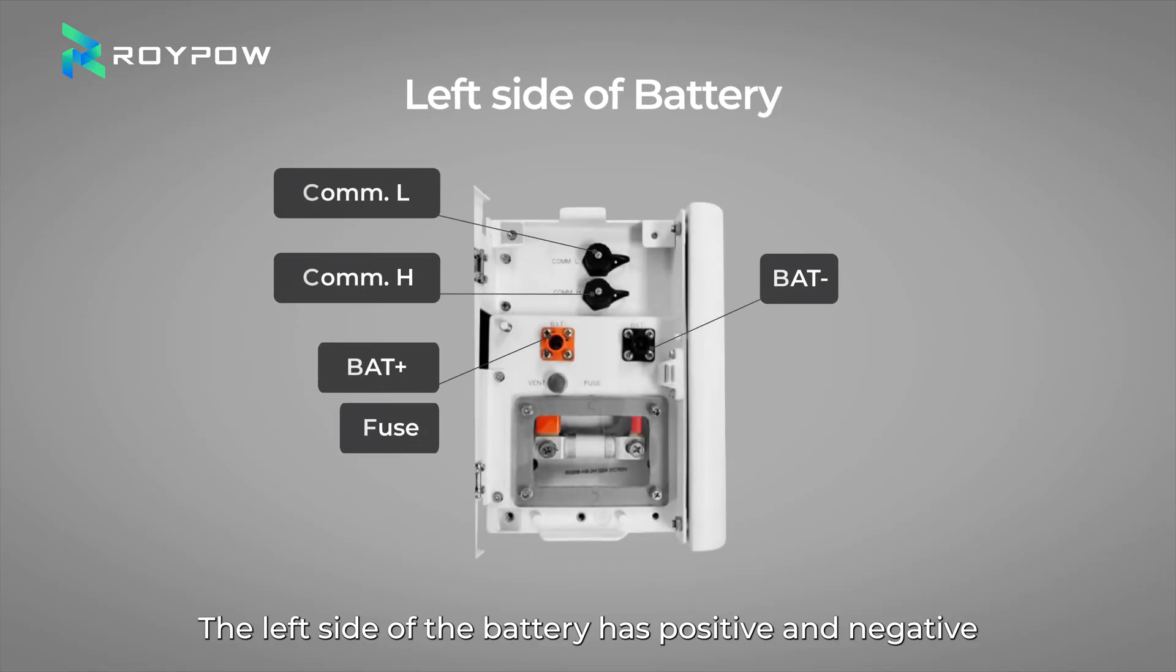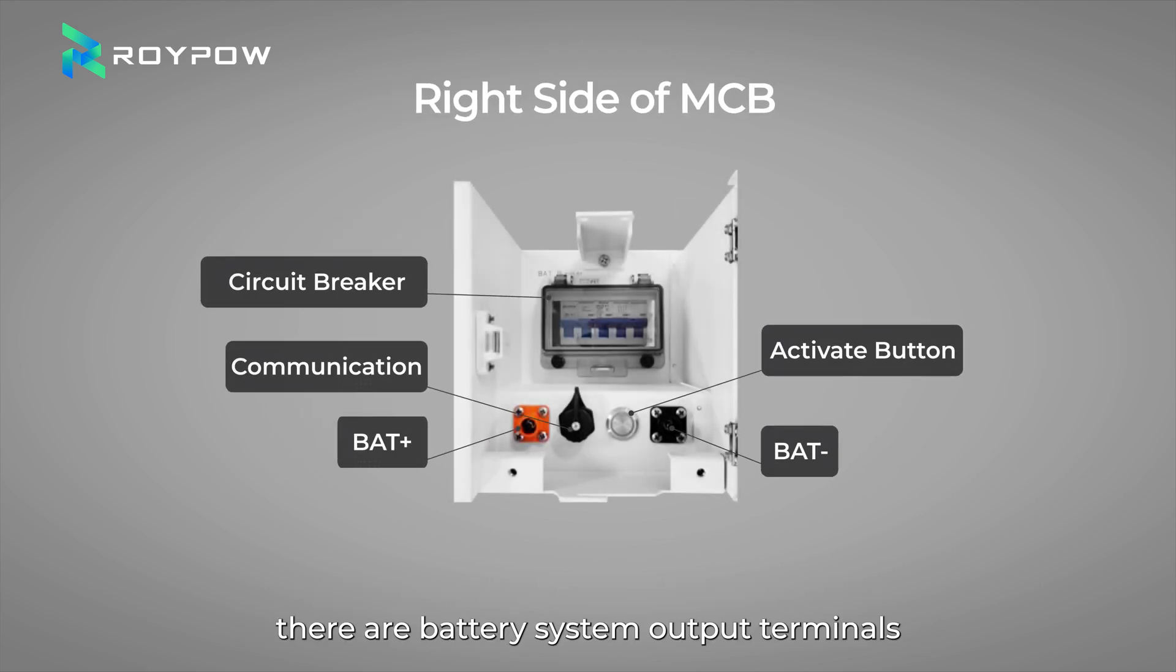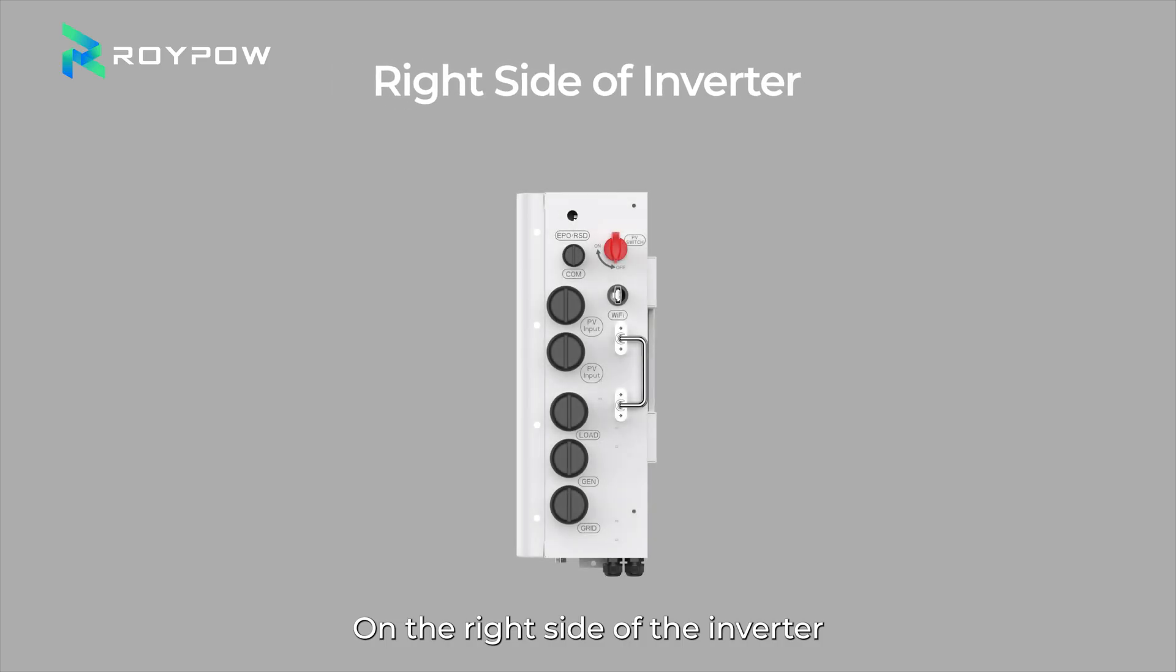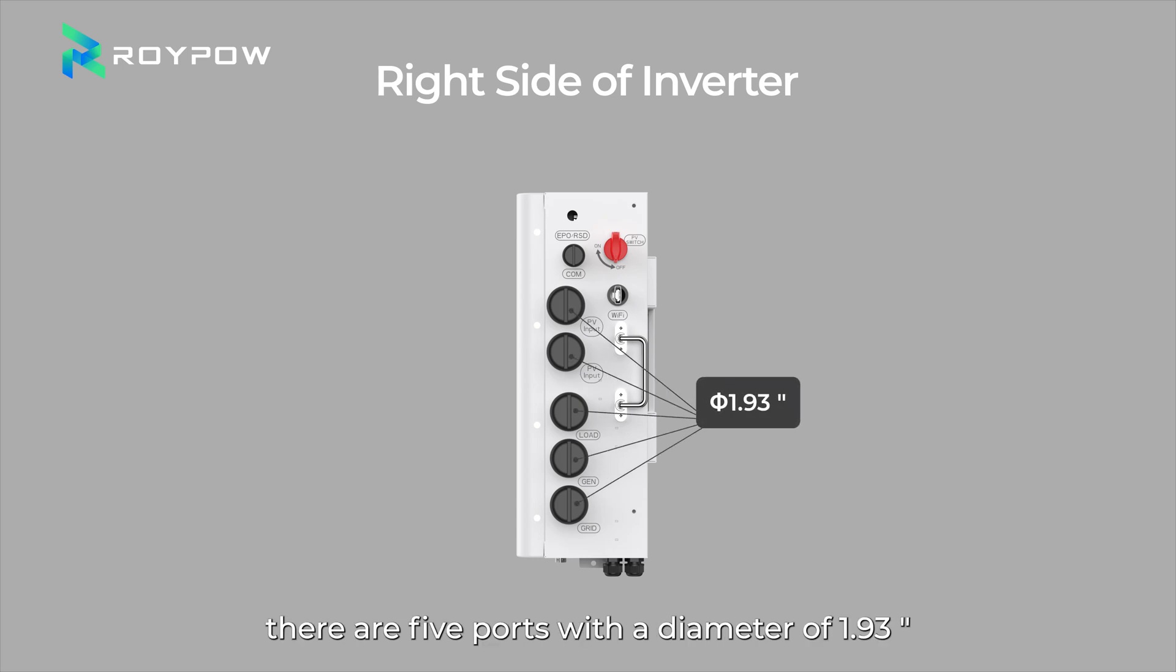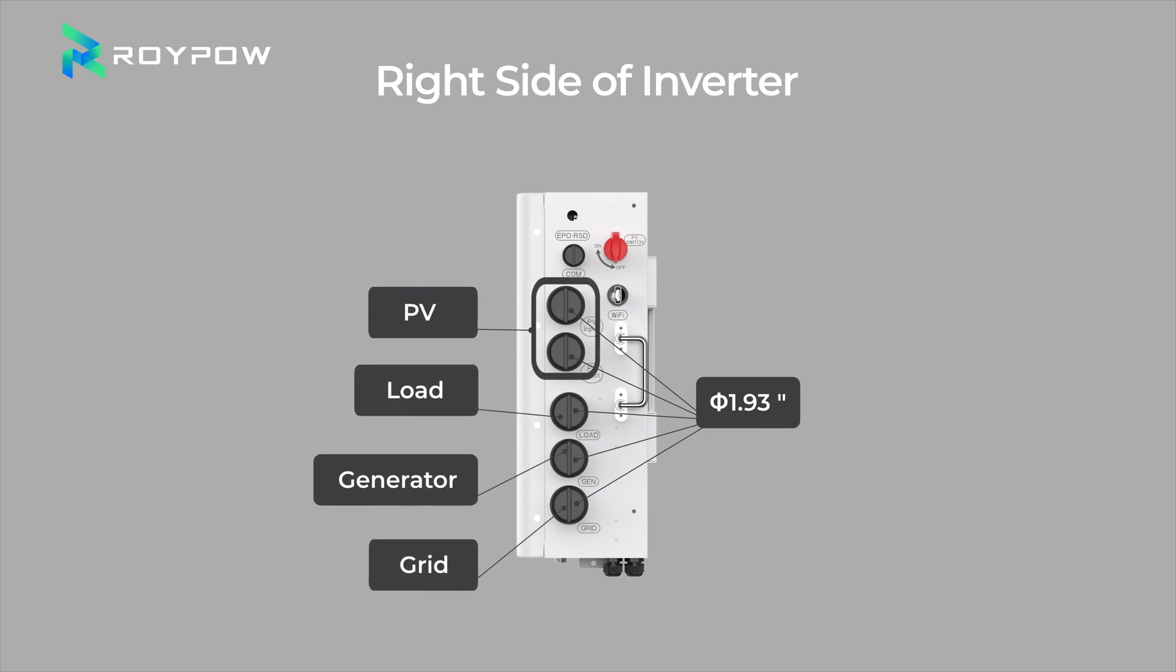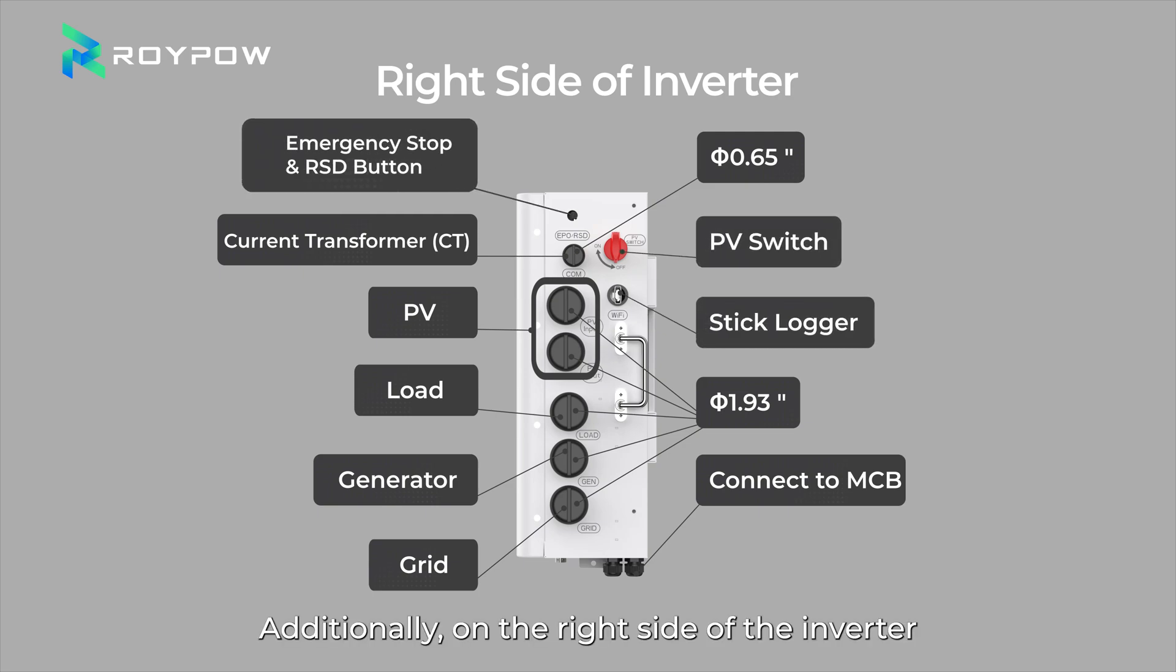The left side of the battery has positive and negative battery output terminals and communication interfaces. On the left side of the main control box, there are battery positive and negative input interfaces and communication interfaces. On the right side of the main control box, there are battery system output terminals, a communication interface, a switch button, and a circuit breaker. On the right side of the inverter, there are 5 ports with a diameter of 1.93 inch, which are used for PV, generator, grid, and load. There is also a 0.65 inch port for CT connection. At the bottom of the inverter, there is a pair of positive and negative cables for connecting to the main control box. Additionally, on the right side of the inverter, there is an RSD switch, a PV switch, and a stick logger interface.